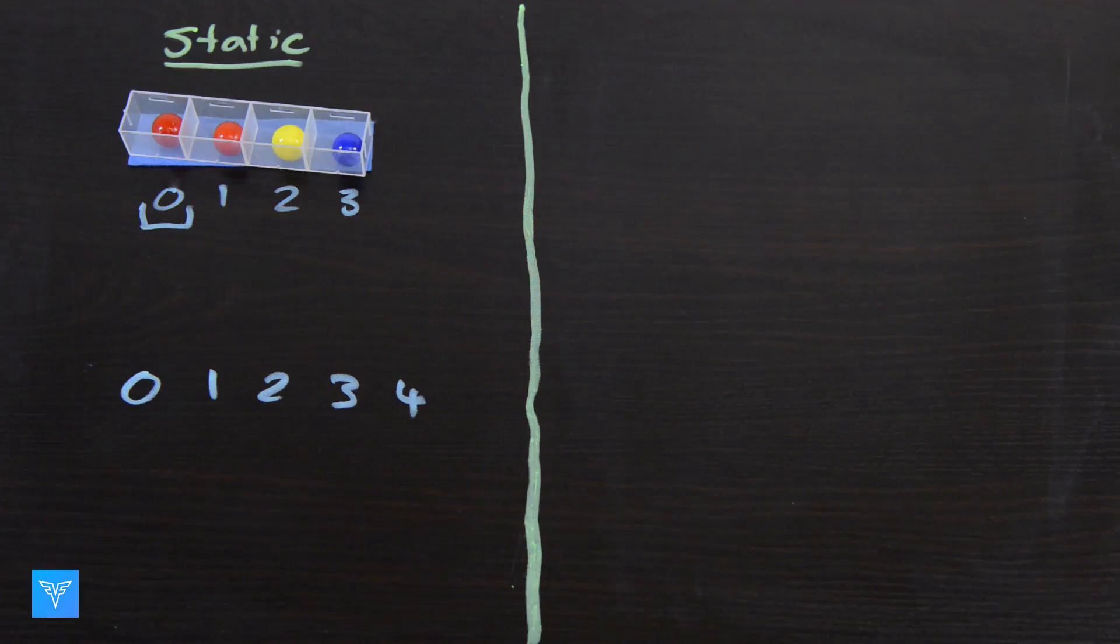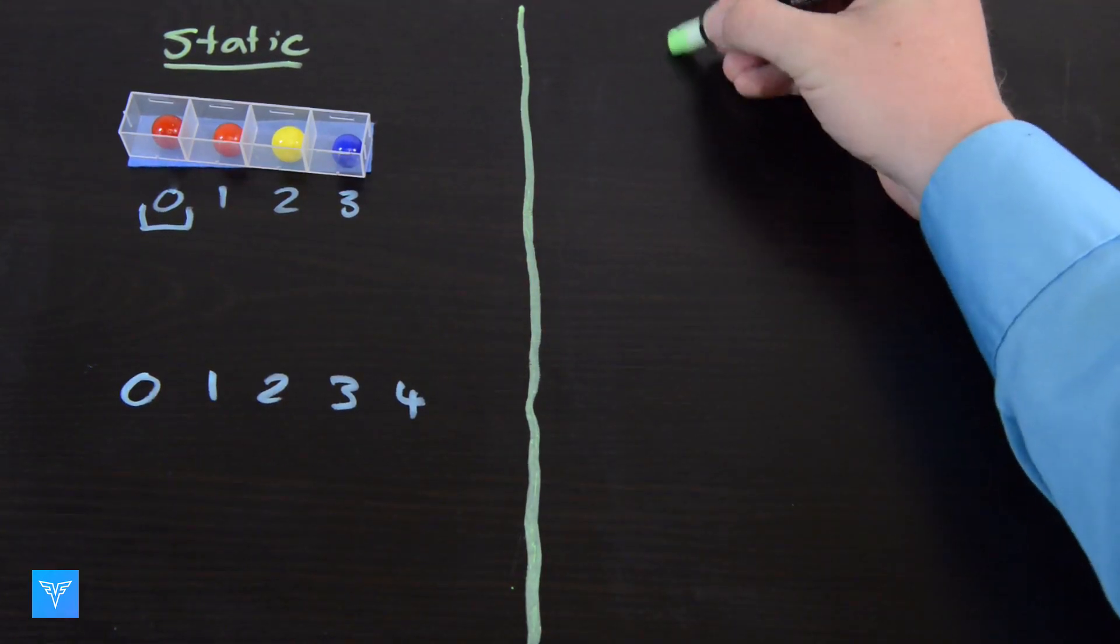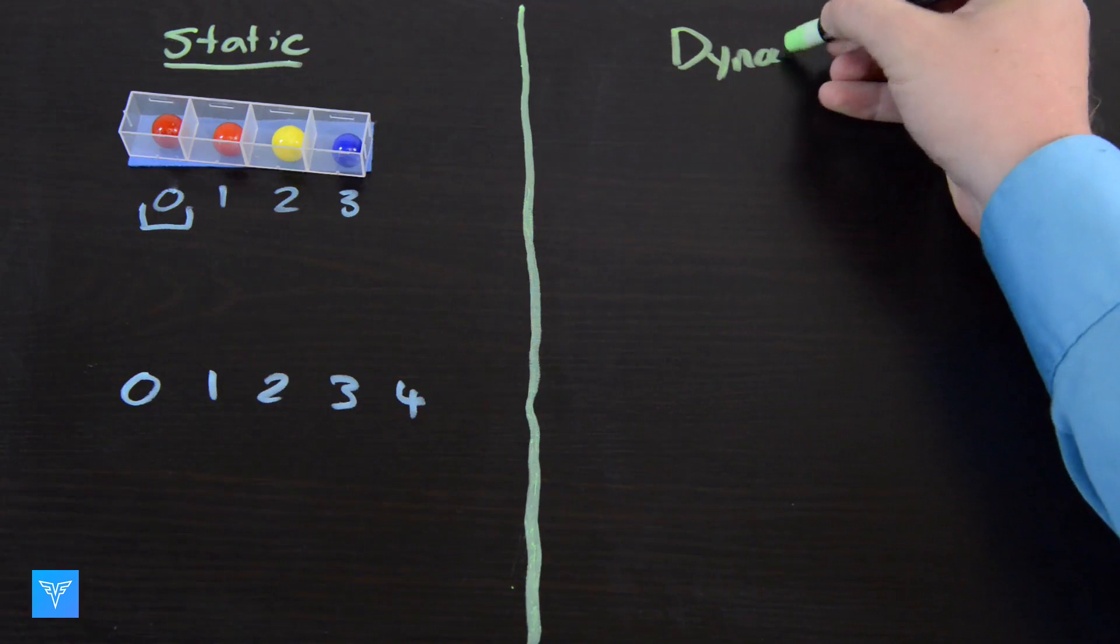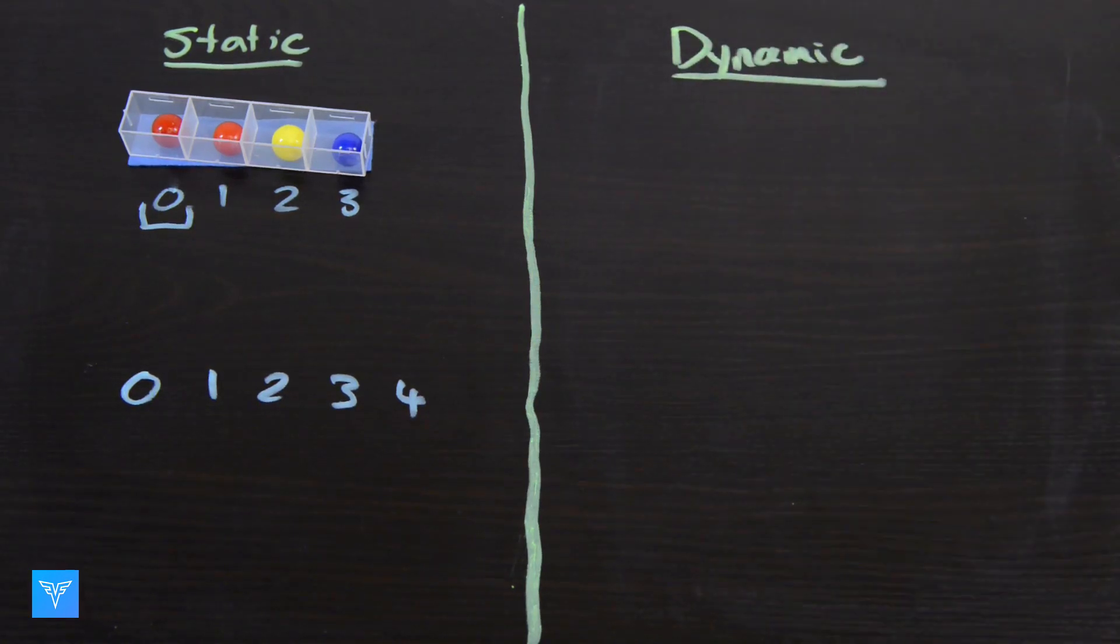If we are frequently adding or removing items from an array, our program can spend a lot of time copying elements between arrays and memory. A dynamic array is one way of addressing this issue.